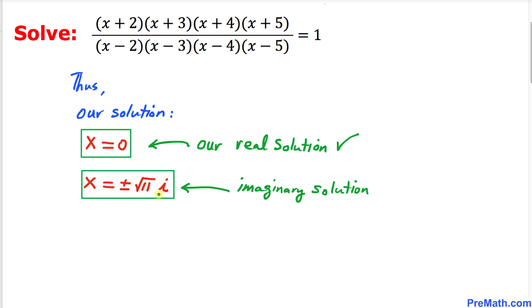So our solution turns out to be x = 0, which is the only real solution. The other solutions x = ±i√11 are imaginary and non-real. Thanks for watching and please don't forget to subscribe to my channel for more exciting videos.